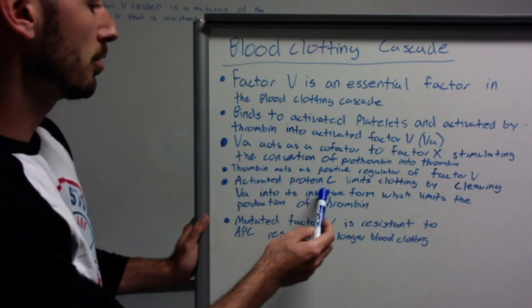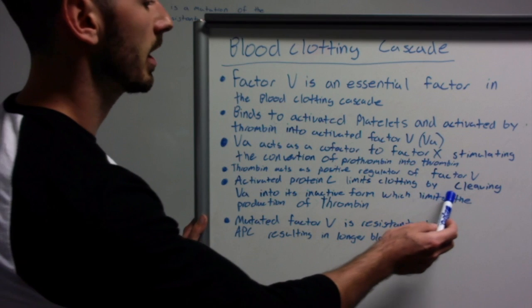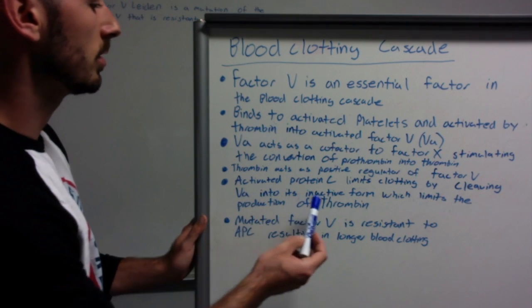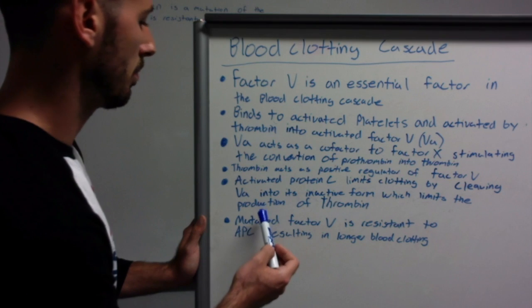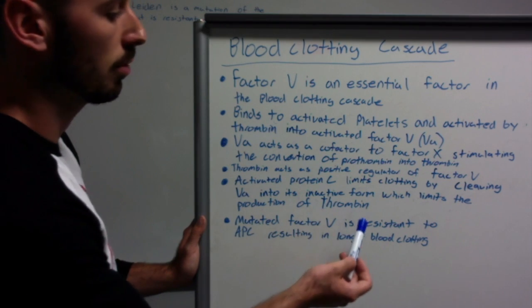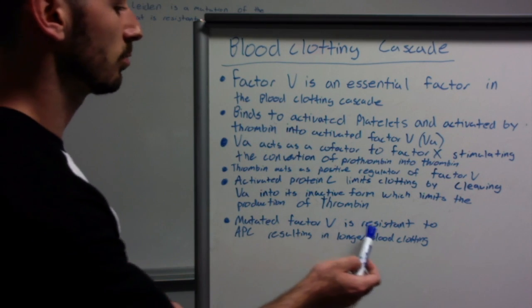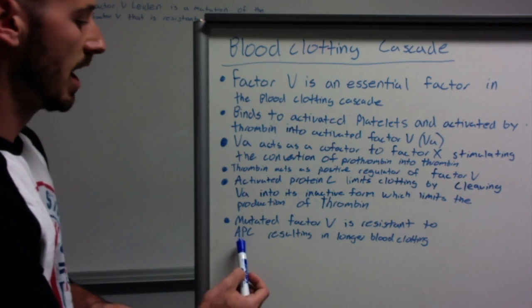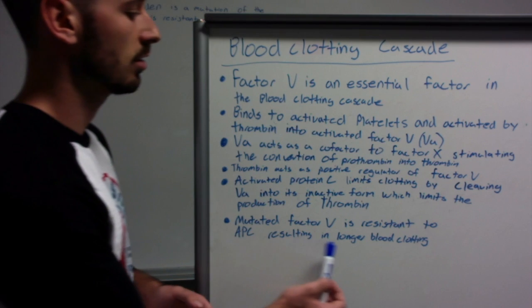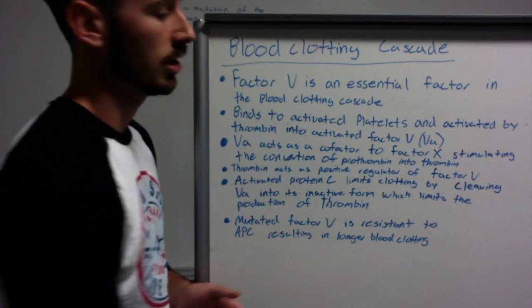Activated protein C limits the clotting by cleaving VA into its inactive form, which limits the production of more thrombin or new thrombin. Mutated Factor V is resistant to the activated protein C, resulting in longer blood clotting than normal.